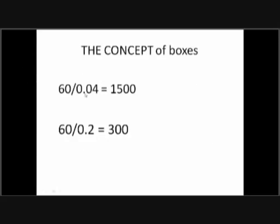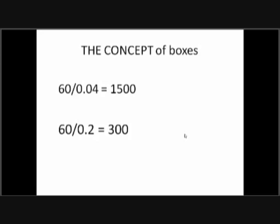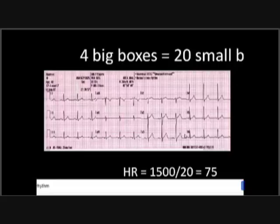One minute has 60 seconds. Dividing by 0.04 seconds gives 1500 small boxes in one minute. Applying the same concept to big boxes: 60 divided by 0.2 equals 300 big squares per minute. Since we cannot count all R waves across 1500 or 300 boxes, we count the boxes between two R waves and divide 1500 or 300 by that number.